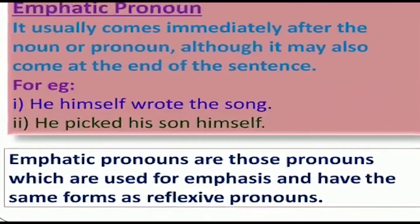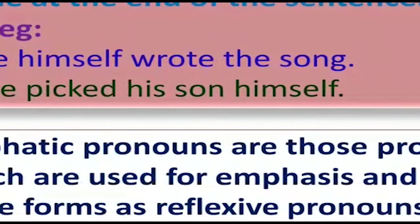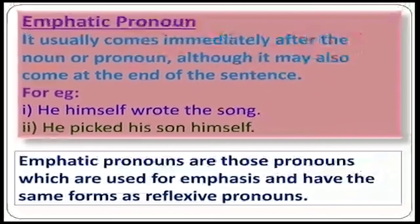From these two examples you will understand it in a much better way. 'He himself wrote the song.' Here, 'he' is the pronoun and 'himself' is the emphatic pronoun emphasizing it. 'He picked his son himself.' Again, 'he' is the pronoun and 'himself' is the emphatic pronoun. So the emphatic pronoun can come after the pronoun or at the end of the sentence. I hope from these two examples it is much more clear to you.